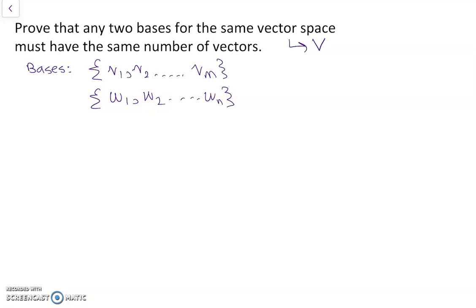So what I'll do is a proof by contradiction, and in this proof by contradiction, I'll assume that N is greater than M. So we have two bases where there are more W's than V's.